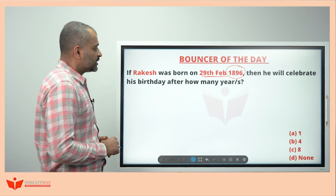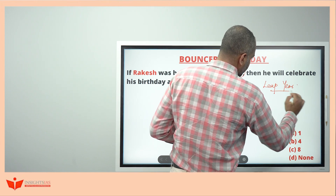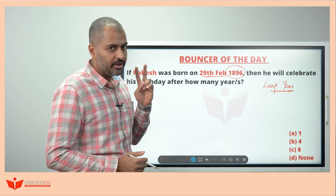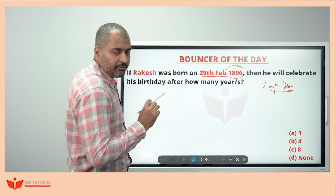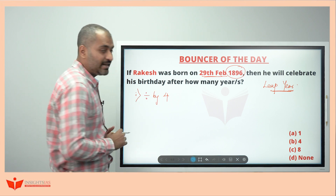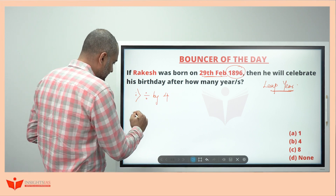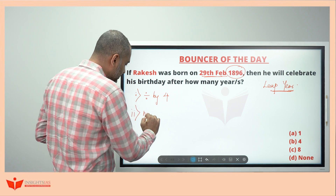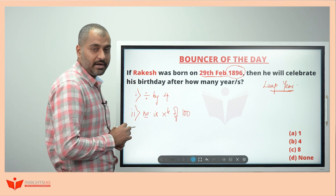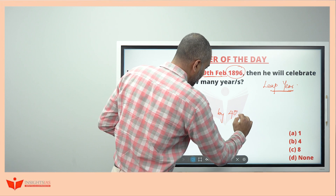This question depends on leap year. A year to be a leap year must satisfy two conditions. One: if a number is divisible by 4, then the year is a leap year. Second condition: if the number is a multiple of 100, it has to also be divisible by 400.